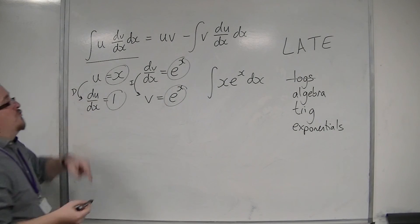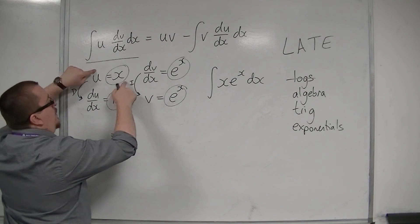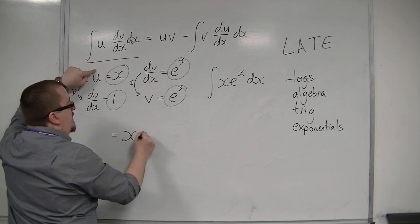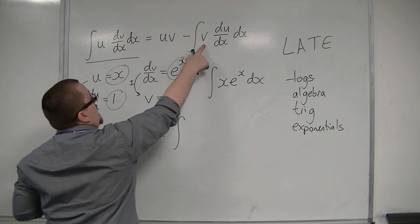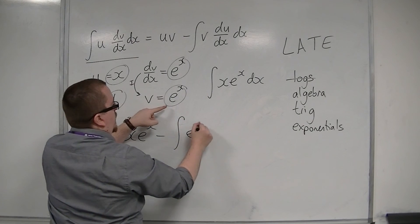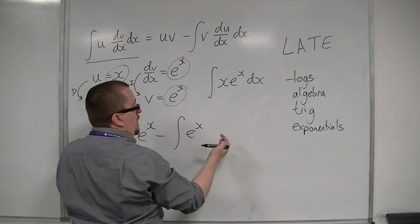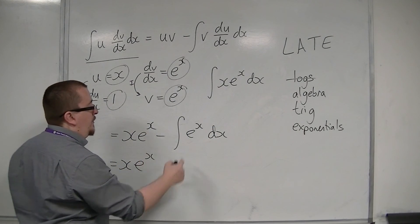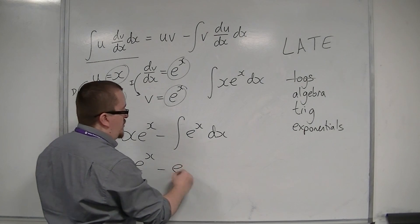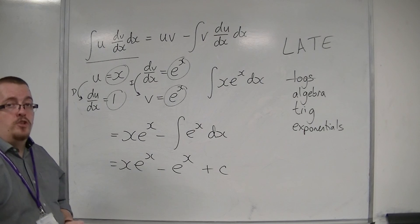So, the integral of xe to the x is u times v, so u times v, so xe to the x. Take away the integral of v, which is e to the x, times by du by dx, which is 1. So, e to the x times 1. So, this is xe to the x take away the integral of e to the x, which is just e to the x. And we've got that plus c, that constant of integration on the end.